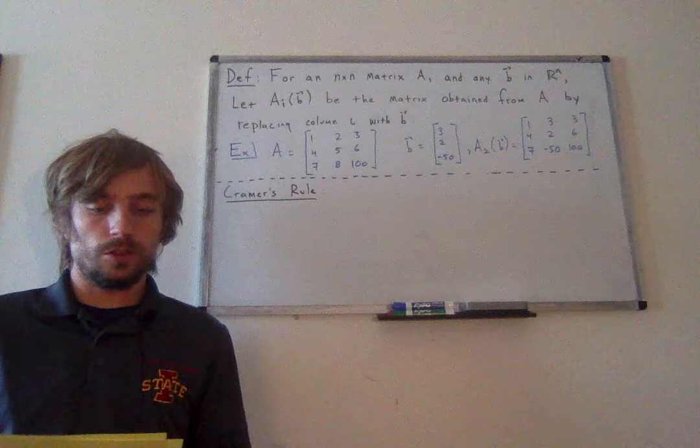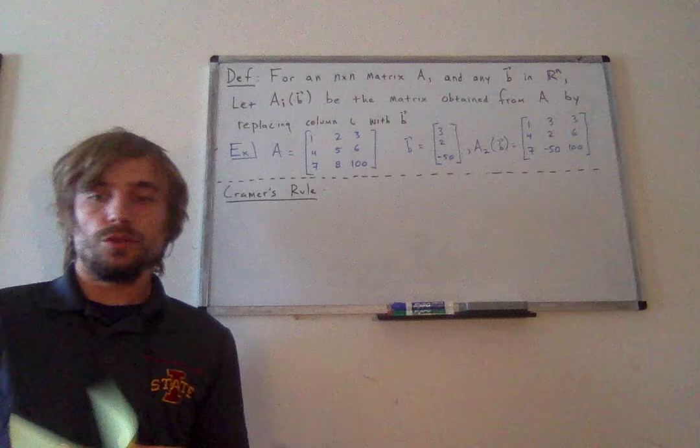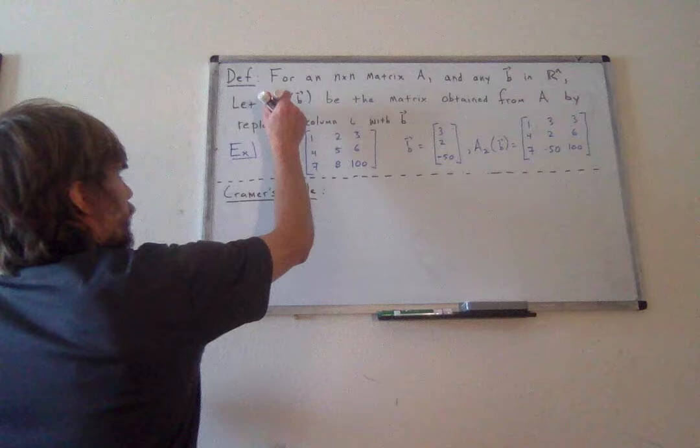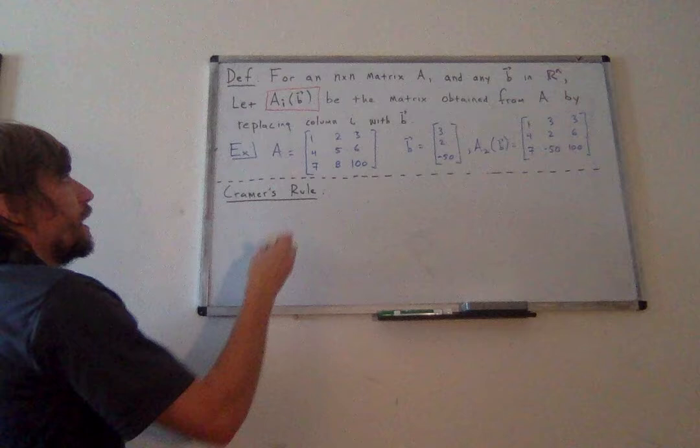We have a little bit of new notation to introduce in order to best talk about what Cramer's Rule is. We say that for any n by n matrix A and any vector B in R^n, this matrix A sub i of B is the matrix that we obtain from A by replacing column i with vector B.